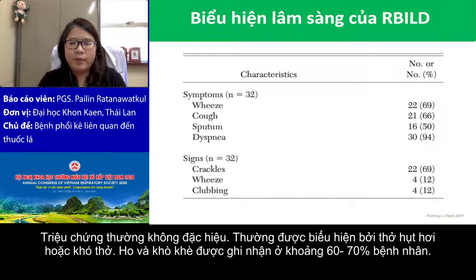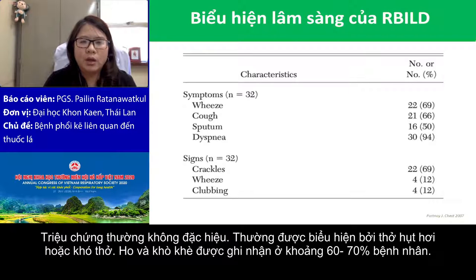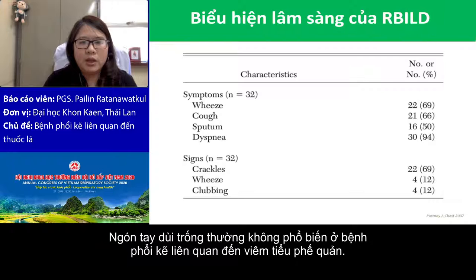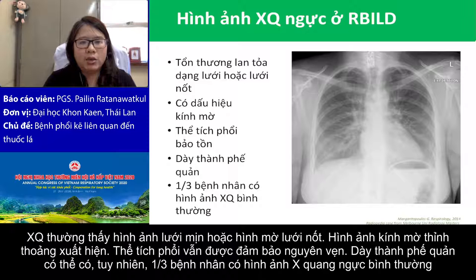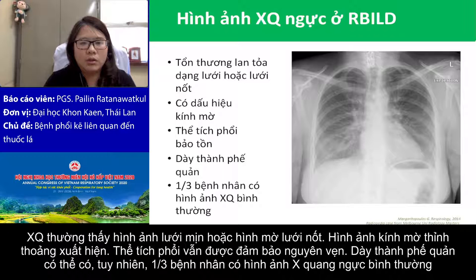Symptoms are non-specific. Most patients present with shortness of breath or dyspnea. Cough and wheezing is found in around 60 to 70 percent of patients. On physical examination, crackles are usually detected. Clubbing of fingers is not very common in RB-ILD. Fine reticular and reticulonodular opacity is usually found in RB-ILD. Ground glass appearance is occasionally seen. The lung volume is usually preserved. Bronchial wall thickening can be noticed. However, one-third of patients had a normal chest X-ray.